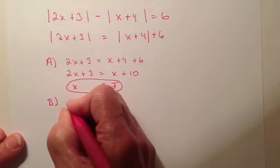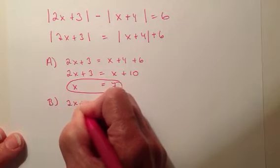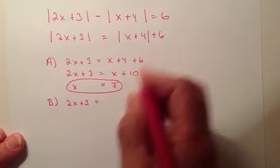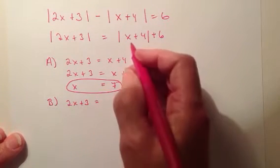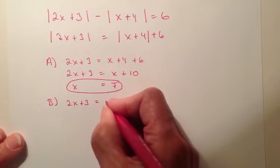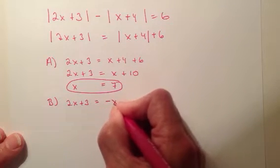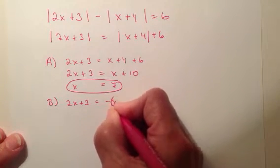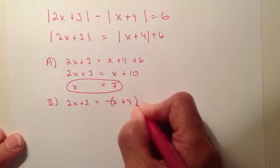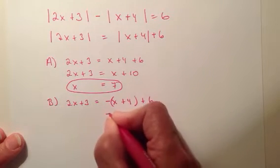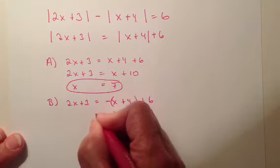So for b, let's assume that 2x plus 3, let's assume the first one is positive, but the second one is negative. So if I make this guy negative, that is going to be negative x. Think of it like as in parentheses. Negative x plus 4 plus 6. So if I distribute that, I get negative x minus 4 plus 6.